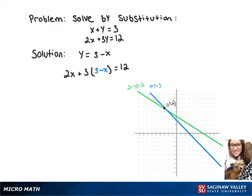And now when we distribute that 3, we'll get 2x plus 9 minus 3x equals 12.